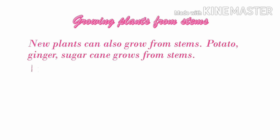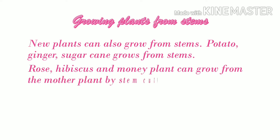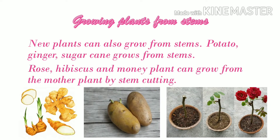Growing plants from stems. New plants can also grow from stems. Potato, ginger, and sugar cane grow from stems. Rose, hibiscus, and money plant can grow from the mother plant by stem cutting. Modified stems grow horizontally, known as rhizomes. They have nodes, internodes, and scale leaves. The stem or tuber is more or less cylindrical in shape and is covered by a brown-colored layer.